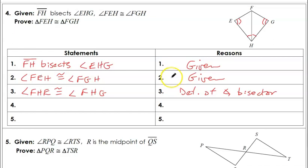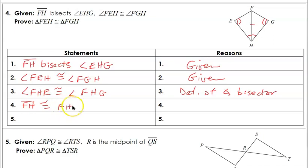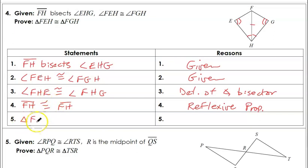We're supposed to do this with Angle-Angle-Side — two corresponding angles being congruent and a non-included side. So we can say that FH is congruent to itself by the reflexive property. Now we've proven that triangle FEH is congruent to triangle FGH using Angle-Angle-Side.